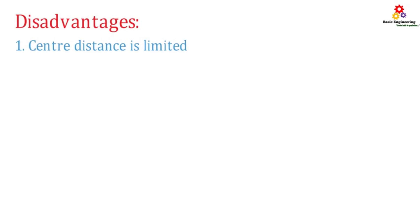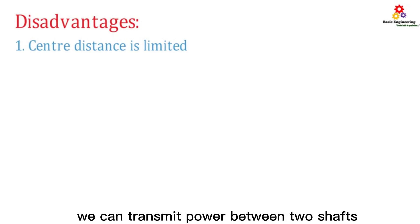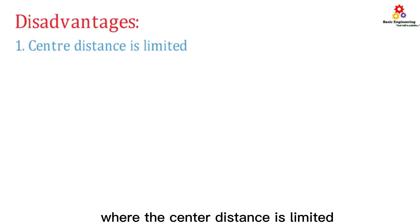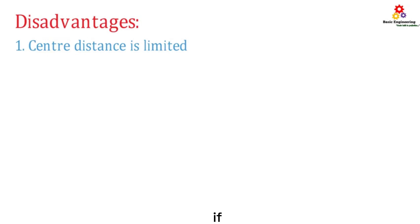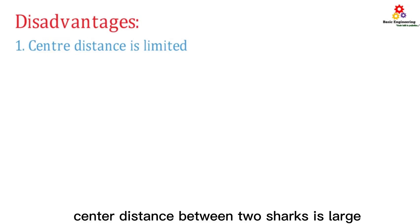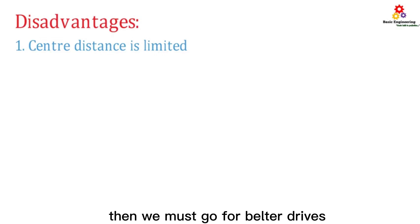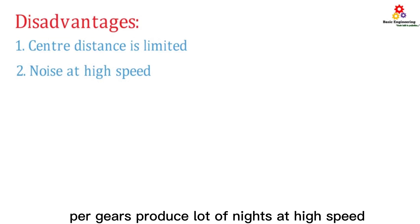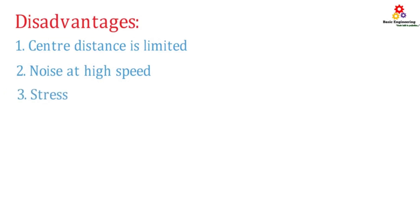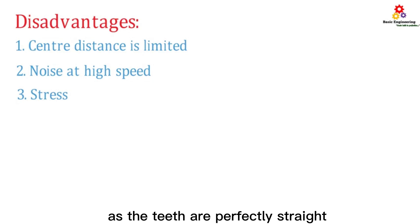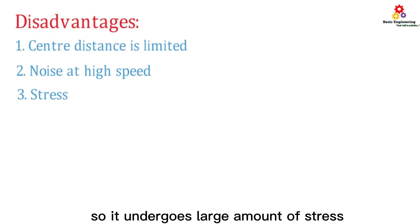Disadvantages: We can transmit power between two shafts where the center distance is limited. If the center distance between two shafts is large, then we must go for belt drives. Spur gears produce a lot of noise at high speed. As the teeth are perfectly straight, they undergo a large amount of stress.